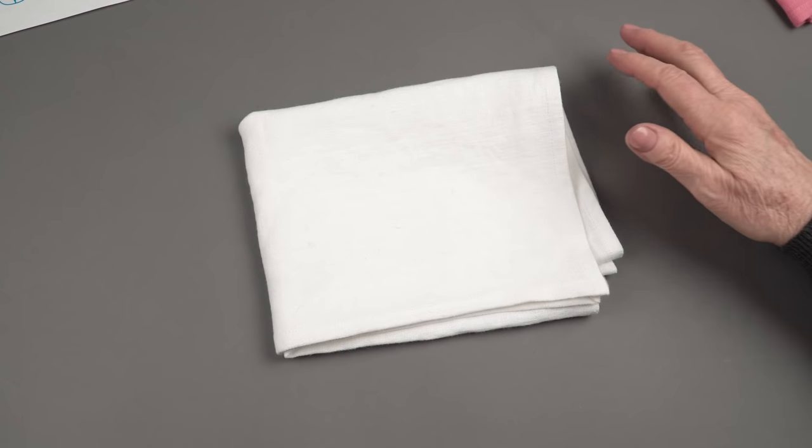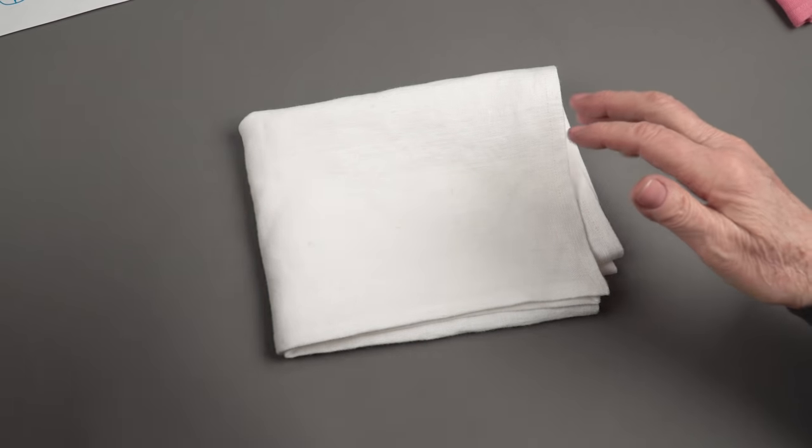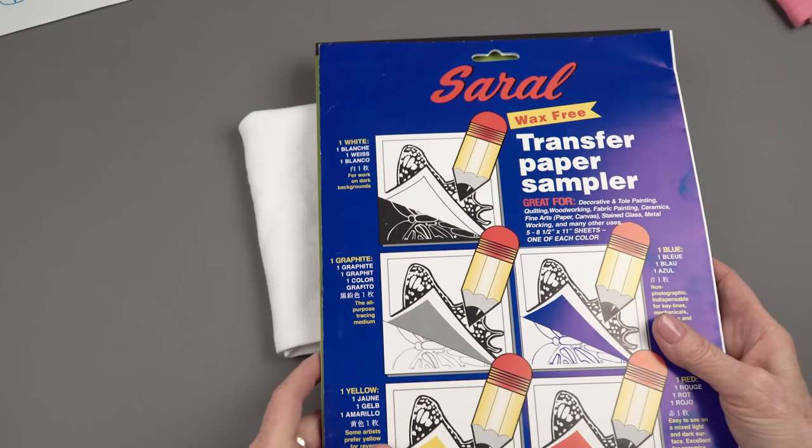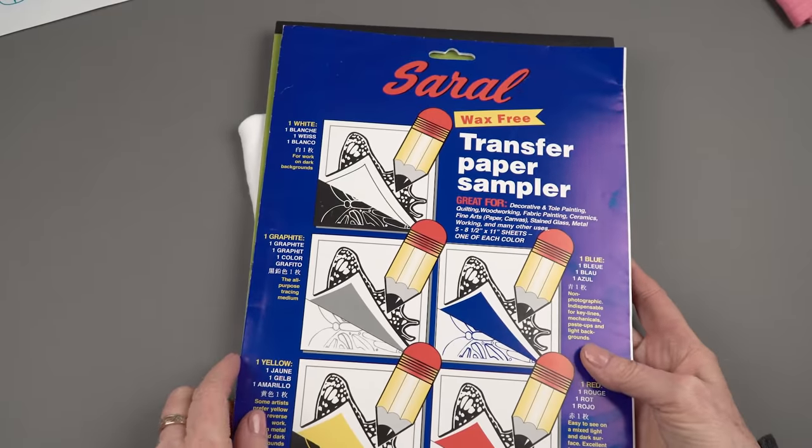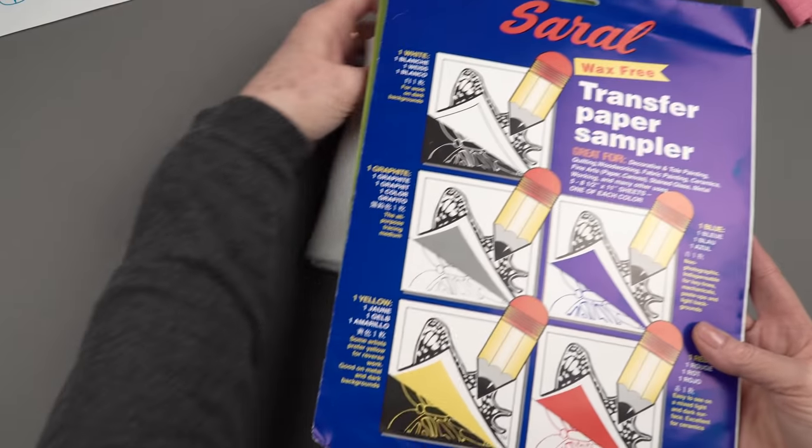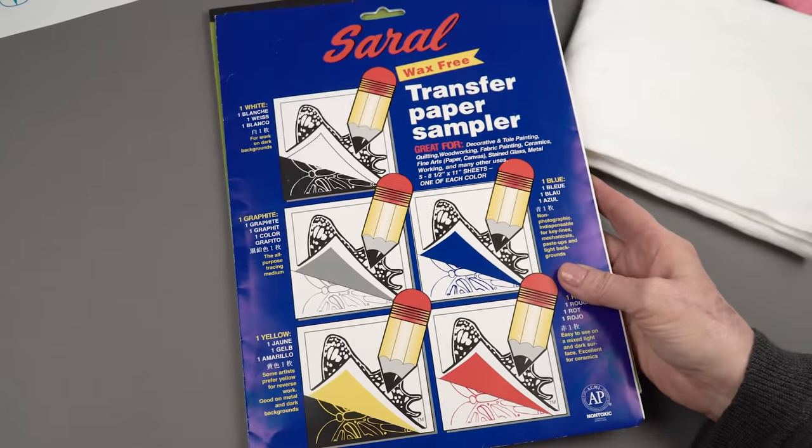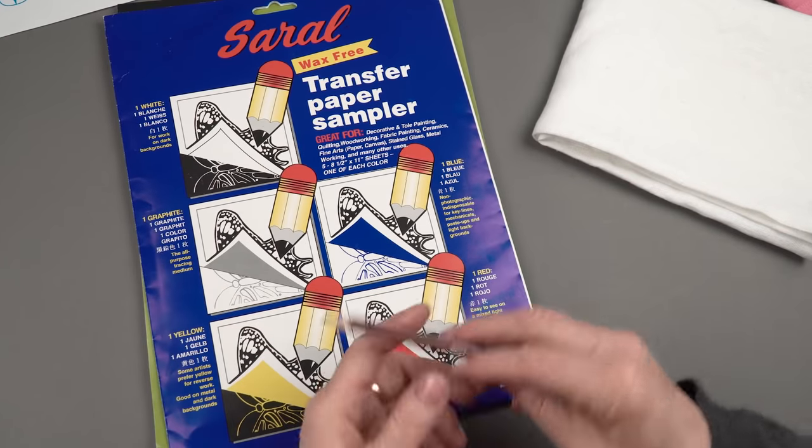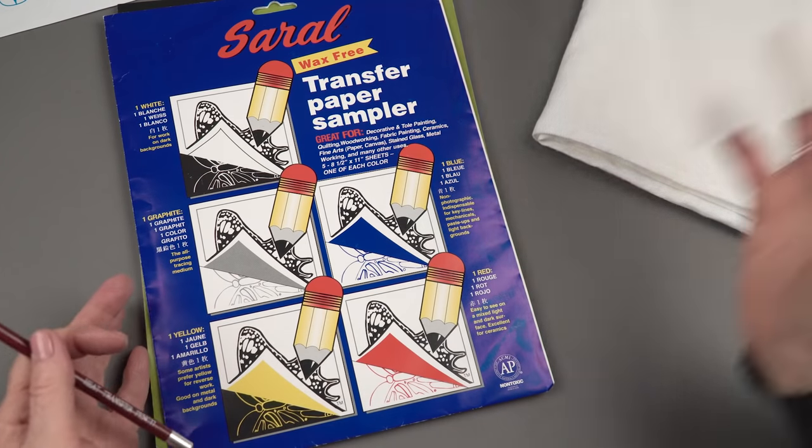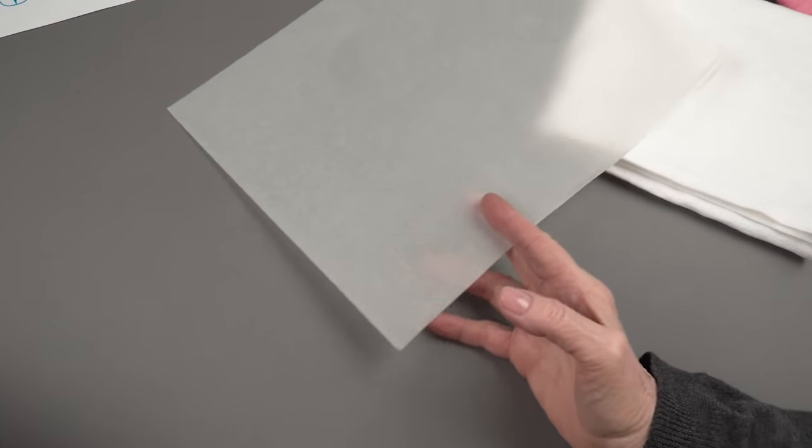So in order to transfer that to your fabric there are several ways. We're going to focus on two. One would be to use transfer paper which works kind of like carbon except it comes in many colors. Or you can use a transfer pencil which uses tracing paper.